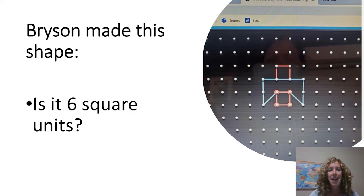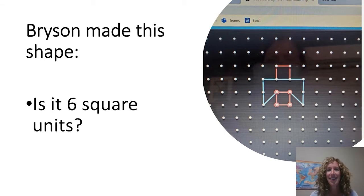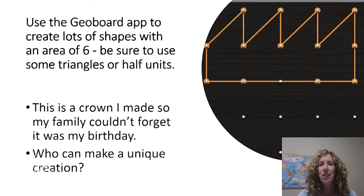A friend of mine named Bryson made this shape — sort of reminds me of a bird. Is this shape six square units? How do you know? Use the GeoBoard app or get your paper and pencil again to create some more shapes with a surface area of six square units. This time, try to include some triangles. You can make lots of shapes with six square units.